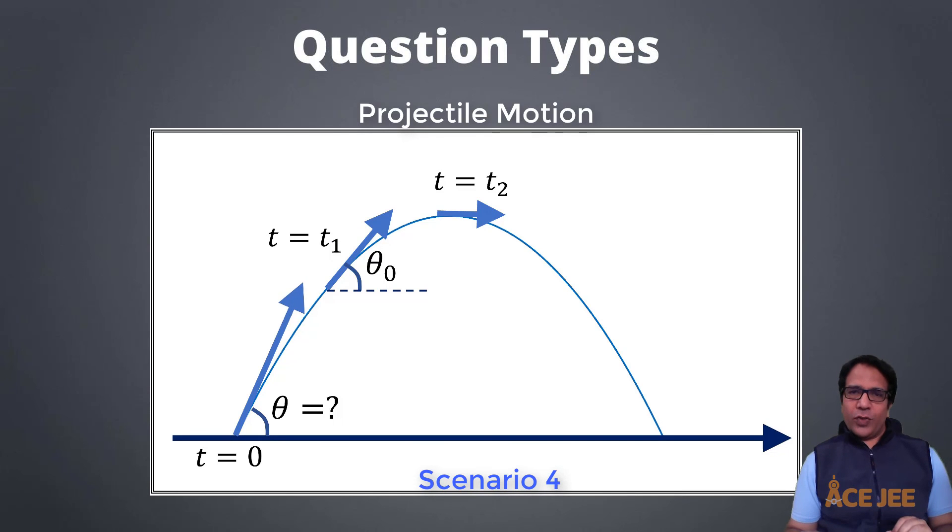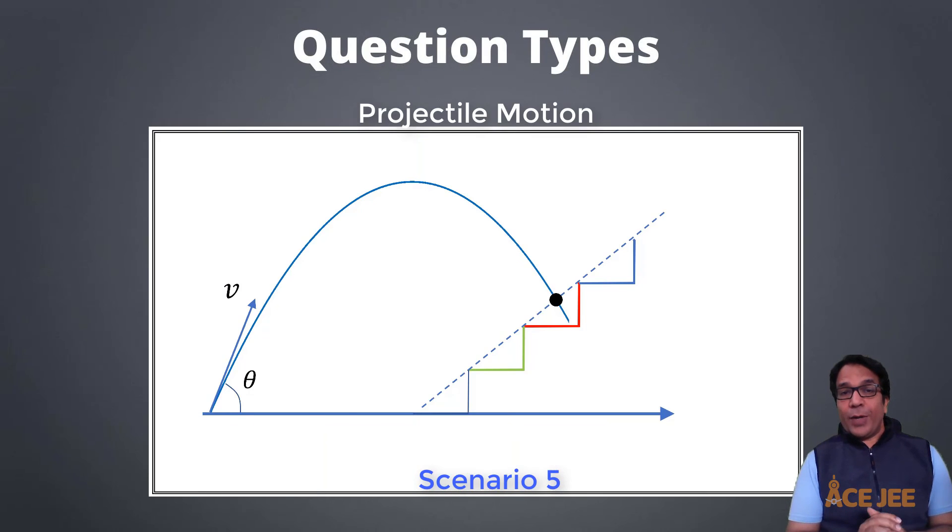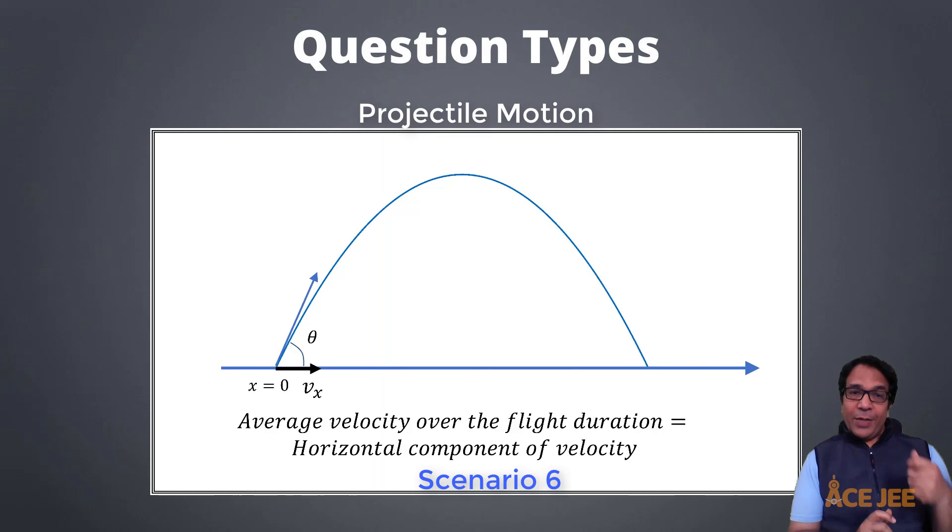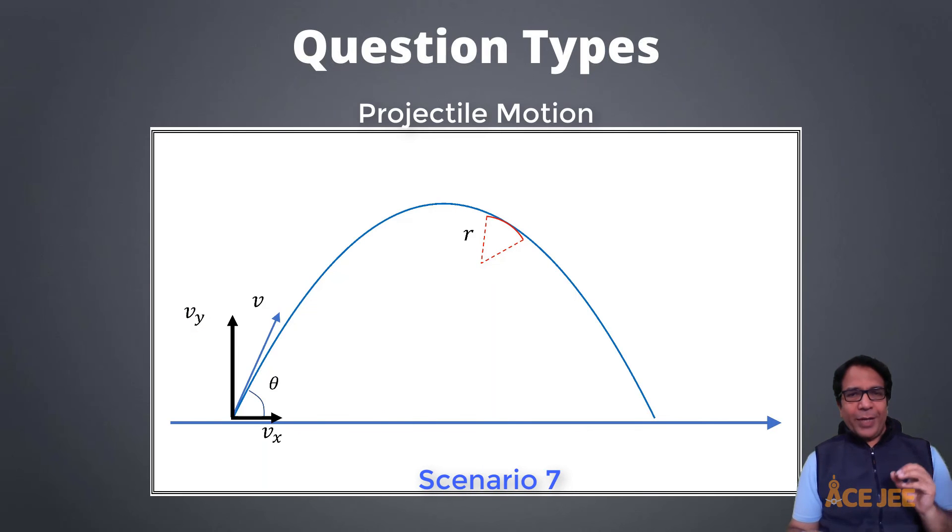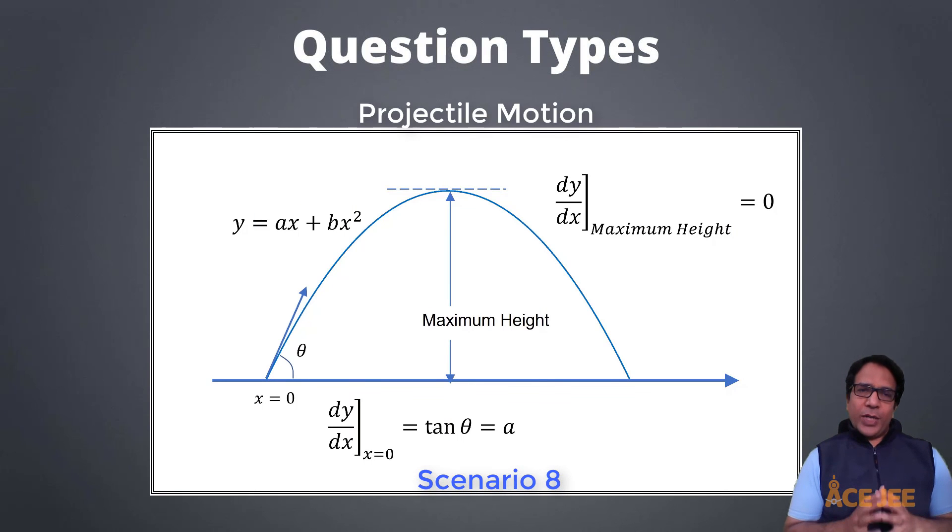In the next scenario, you may not be given the launch velocity and projection angle, but angle the velocity vector of the projectile makes with the horizontal at two different times in its flight, and you might be asked to determine some unknown about the flight path. Or you might be given that a projectile has some obstacle in its path, say a wall or a hill, and you might be asked to determine where the projectile will hit the obstacle. Or you might be asked to determine the average velocity during the symmetric part of the flight. In the next scenario, you might be asked to determine the radius of curvature at a certain point along the trajectory. Or you might be given an equation of trajectory of a projectile and asked to determine its launch velocity and projection angle and so on and so forth.